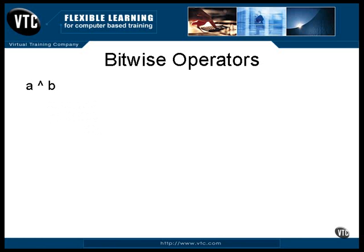There is one other: the exclusive OR, sometimes written as one word spelled XOR. The operator is the up caret character — it's on the same key as the number six on your keyboard. An exclusive OR results in a one where one or the other of the input values were one, but not both. That is, a bit in the input value being the same will result in zero; if they're different, it produces one.